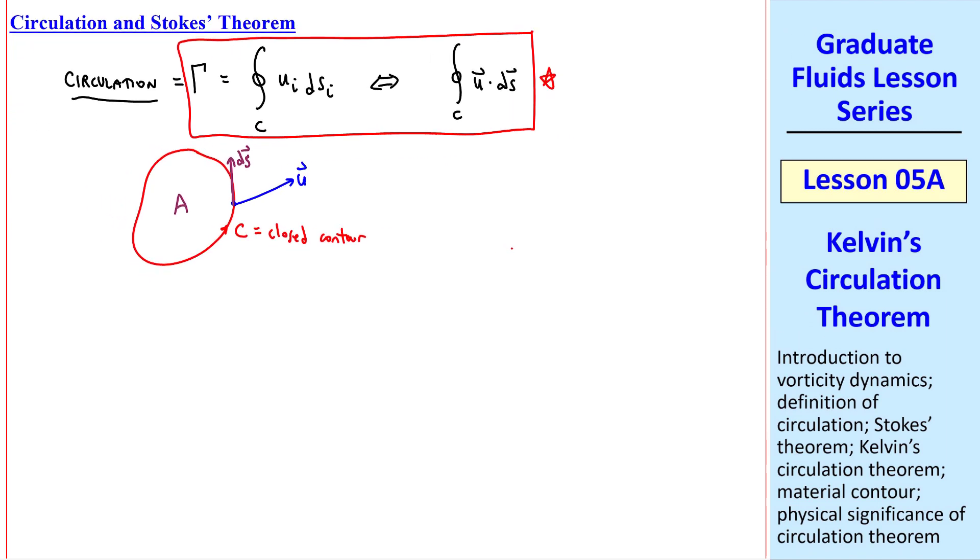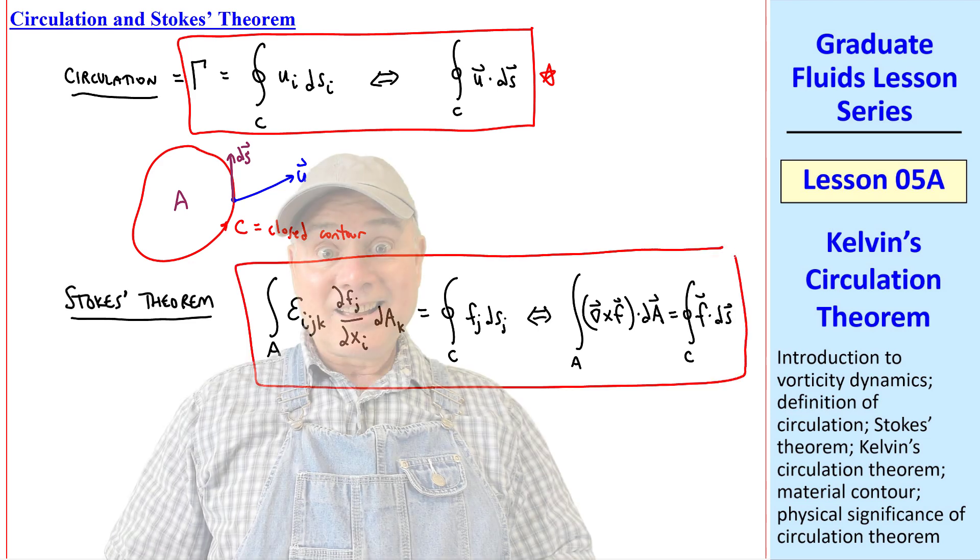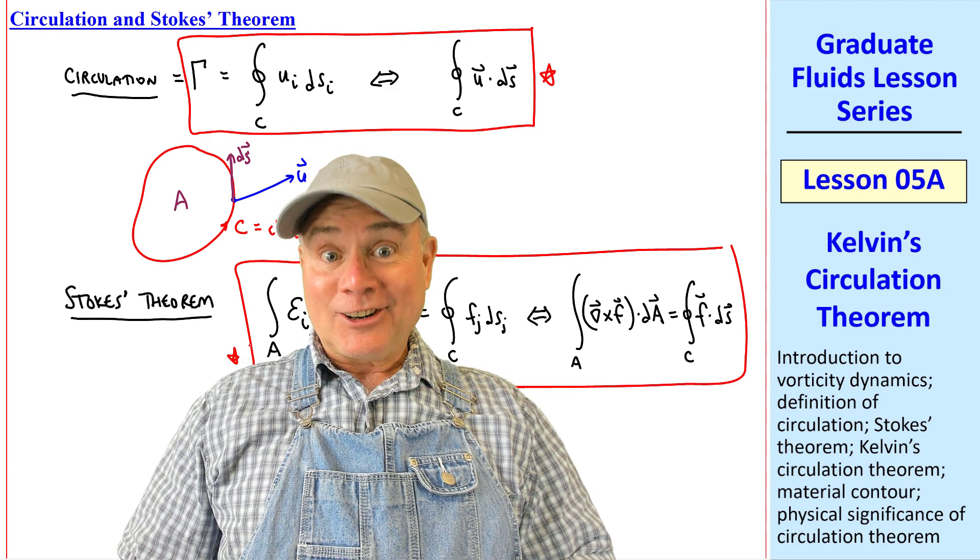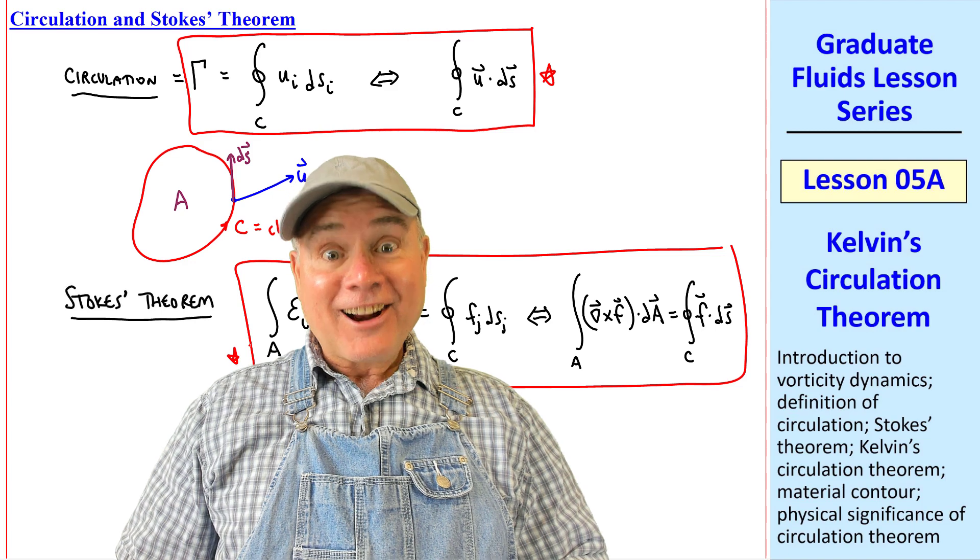There's a theorem you may remember from math class, called Stokes' theorem, which deals instead with an area integral of epsilon ijk del fj del xi dak, and Stokes' theorem says that that's equal to a closed contour integral of fj dsj. In vector notation, we recognize this as a cross product, and then a dot product with da. And the right-hand side is again just a dot product. This is Stokes' theorem. Professor, is that the same Stokes as the famous Navier-Stokes equation? It sure is. Wow, he must have been one smart feller. Yes, he was, dude.